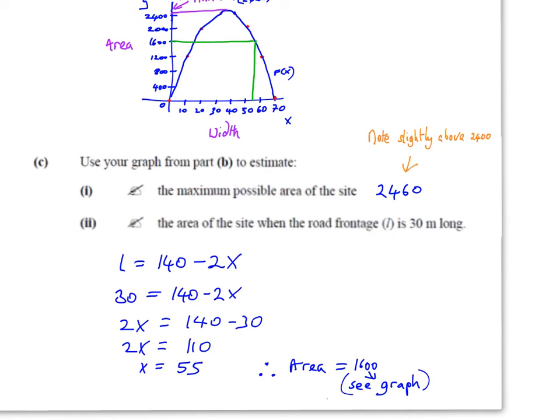You have to work out what the width is when the length is 30 meters. Go back to your answer from part (a): l = 140 - 2x. If we put l equal to 30, we get 30 = 140 - 2x. Solving that equation, we find that x = 55. So when the length is 30, the width is 55. Go to where the width is 55, go up to the curve and across to find the area, which looks like 1600. Whenever it says use your graph, indicate with lines where you got this figure from.